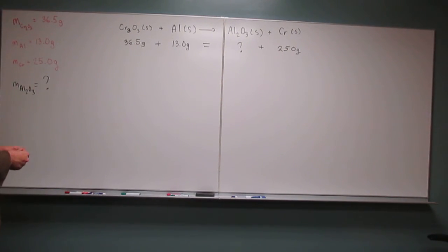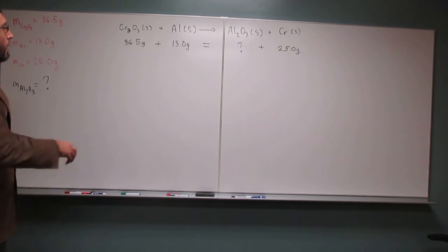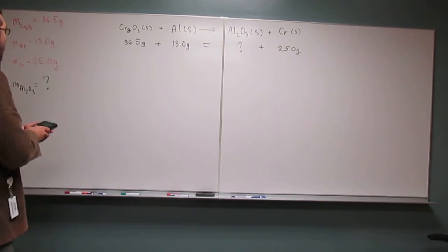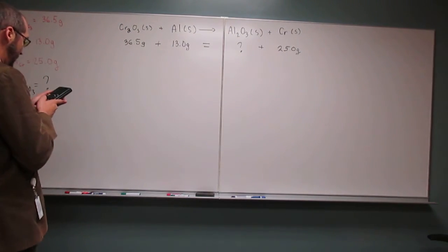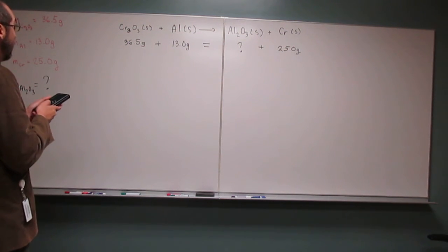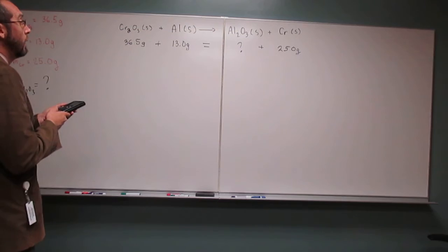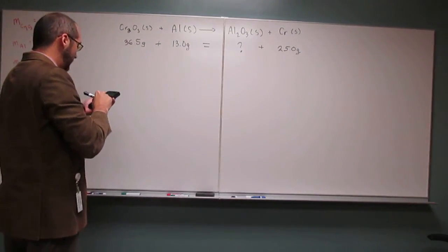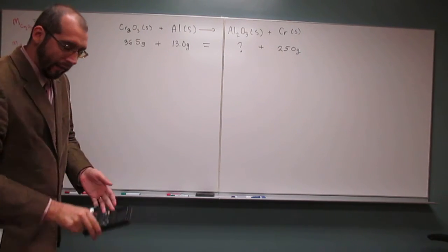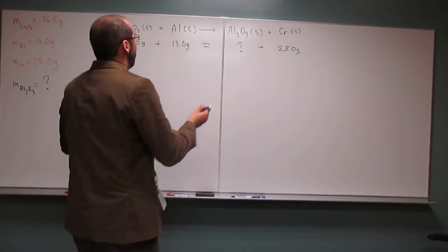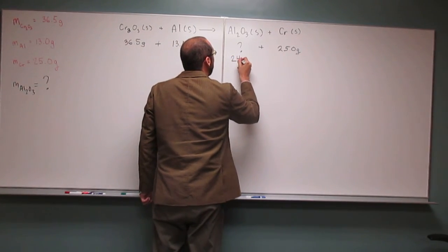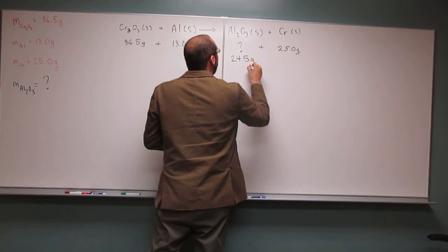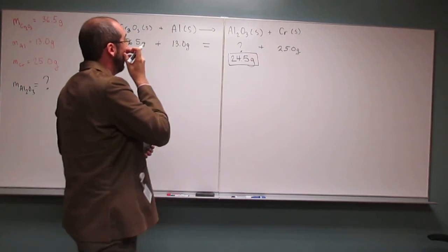So all we really have to do now is algebraically manipulate to solve for X. We could say 36.5 plus 13.0, and then move this over here and subtract it, minus 25.0.